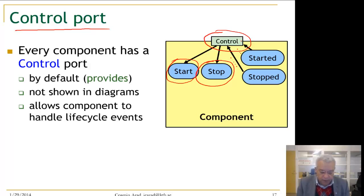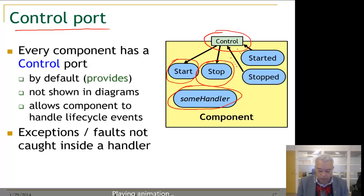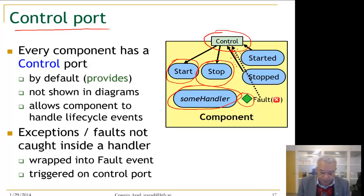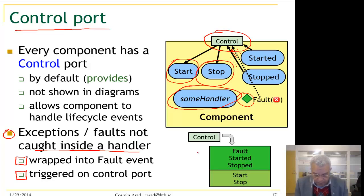Another event that is part of the lifecycle and supported by the control port is handling faults. If some handler creates an exception and this exception is not caught within the handler, it will be converted to a fault event. This fault event will be sent through the control port to the parent component. So exceptions not caught inside a handler are wrapped into a fault event and triggered on the control port.